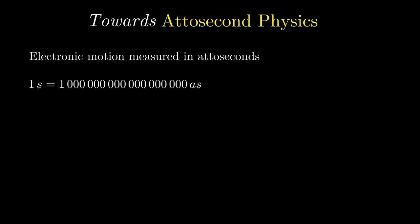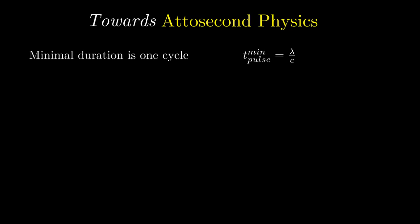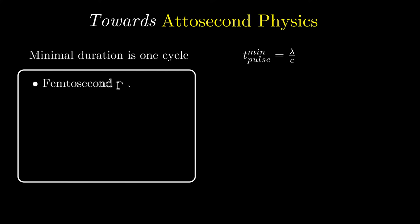Electrons move incredibly fast, so fast we need to measure their motion over a period of attoseconds. To clarify, one attosecond is a billion billion times smaller than one second. That is roughly what one second is compared to the age of the universe. To get to this level of precision in time is incredibly difficult.